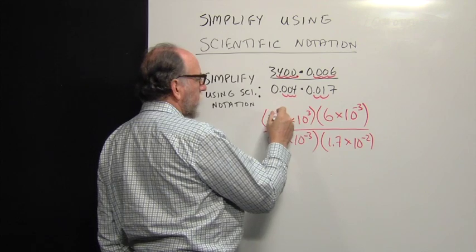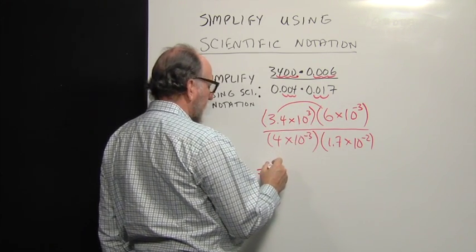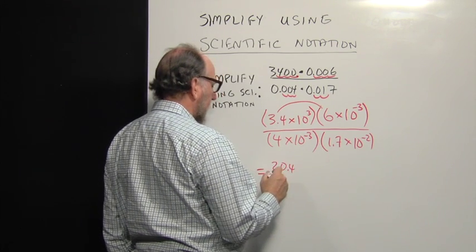So we can multiply 3.4 times 6. And 3.4 times 6 is 20.4. You can check that on your calculator.